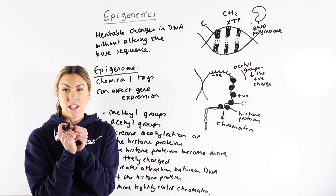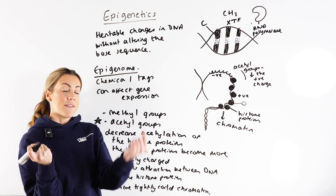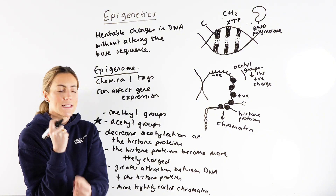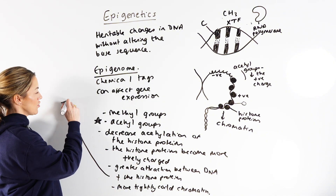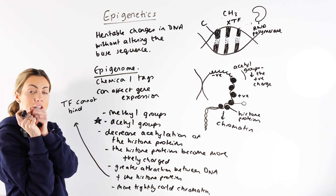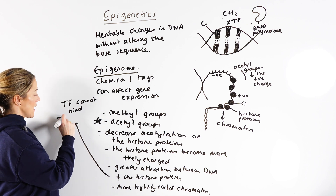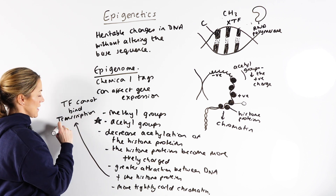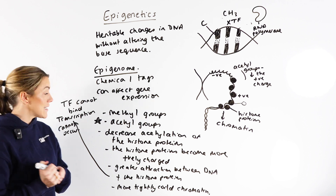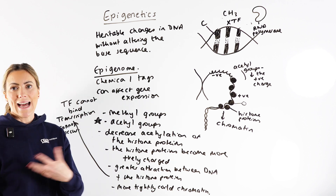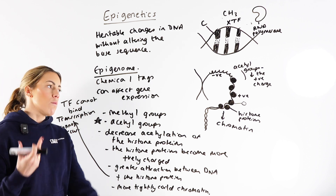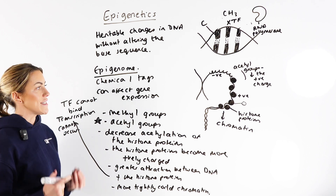The attraction is stronger between the positively charged histone proteins and the negatively charged DNA, so the chromatin is more tightly coiled. This means the transcription factor cannot bind to the promoter region because it's hidden. Transcription cannot occur — RNA polymerase cannot attach, cannot initiate transcription, we won't make the mRNA, we won't make the polypeptide. So gene expression is switched off.